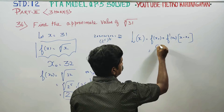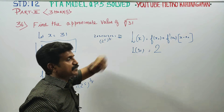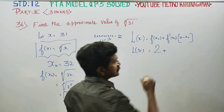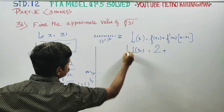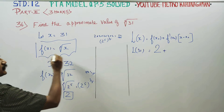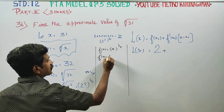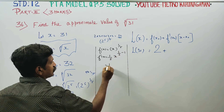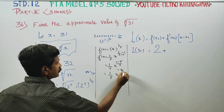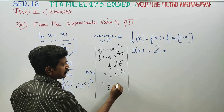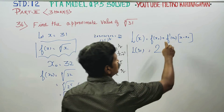So f of x₀, that is f of 32, is 2. Now for f dash of x: since f of x equals x power 1 by 5, differentiating gives f dash x equal to 1 by 5 times x power 1 by 5 minus 1, which simplifies to 1 by 5 times x power minus 4 by 5.